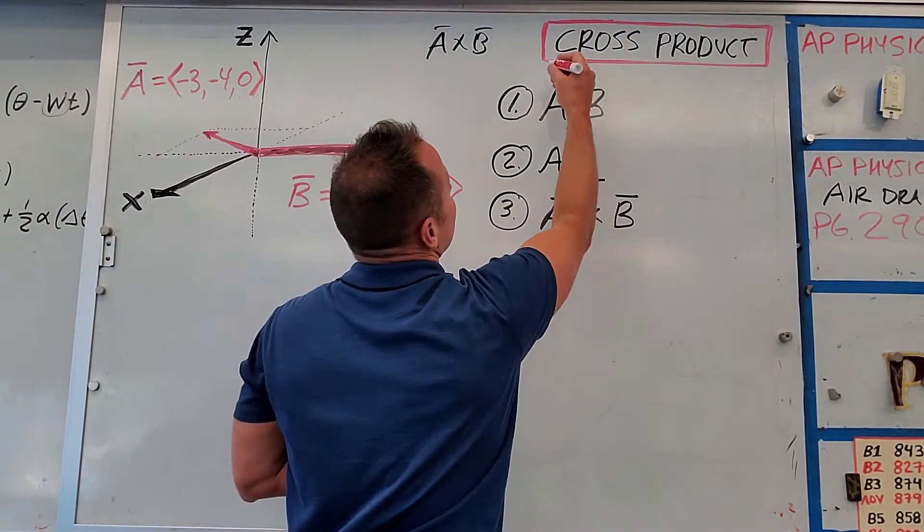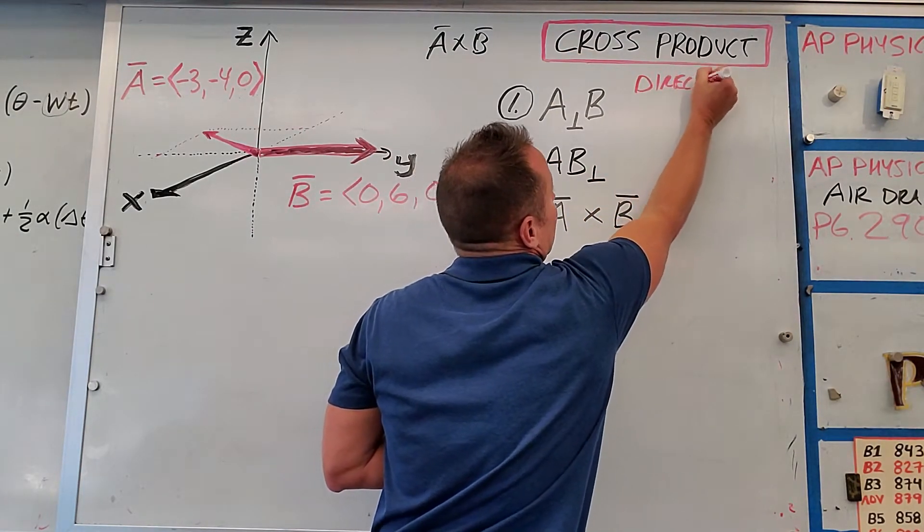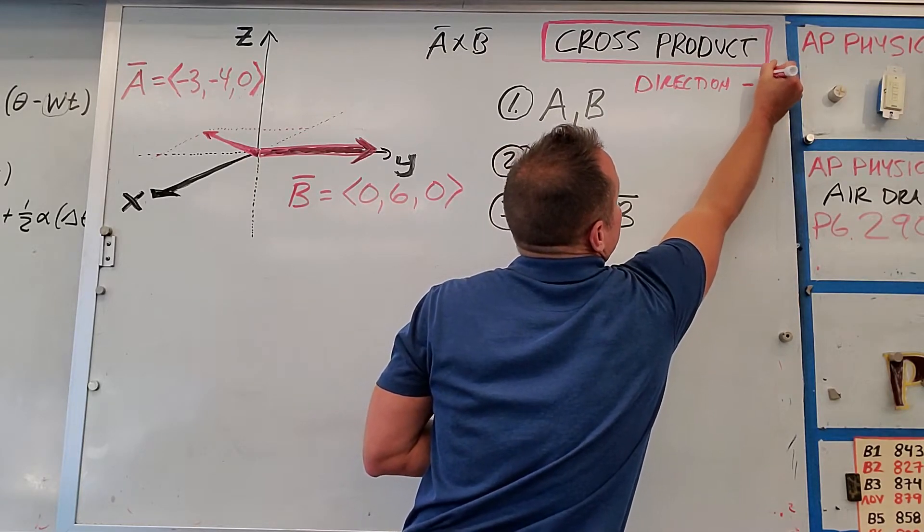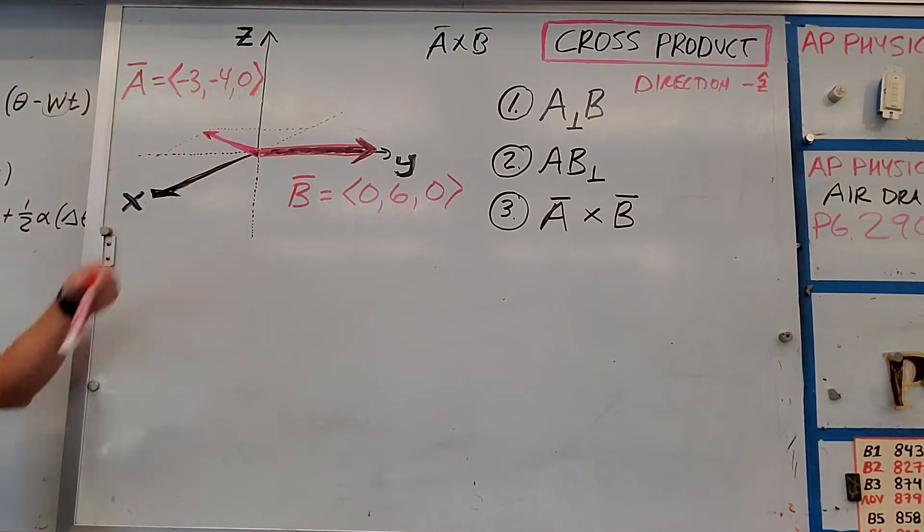So before we even start, the direction is going to be along the negative Z direction. You could say negative Z hat, or sometimes if you use I, J, K, you could say it's along the negative K hat direction.